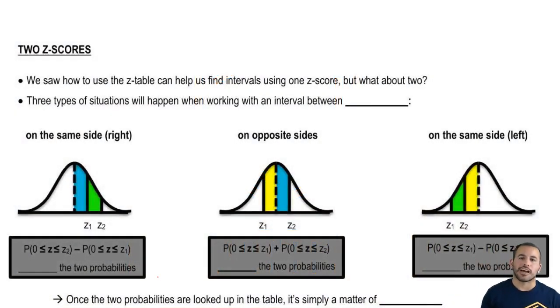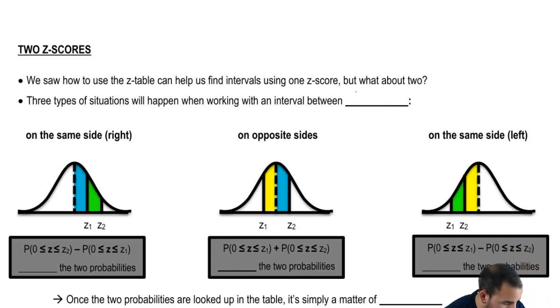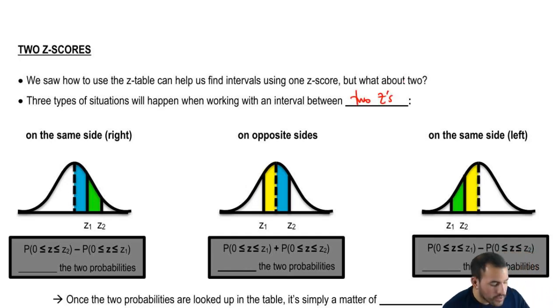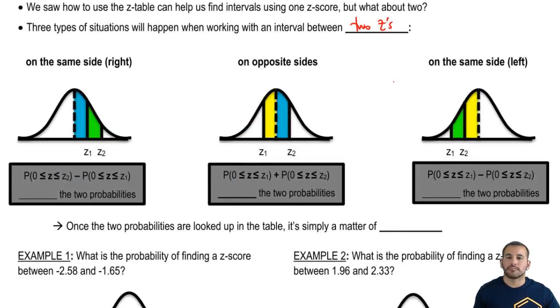Three types of situations are going to happen when you're working with an interval between two z-scores. We either have both on the same side on the right — so what do we do with that situation?